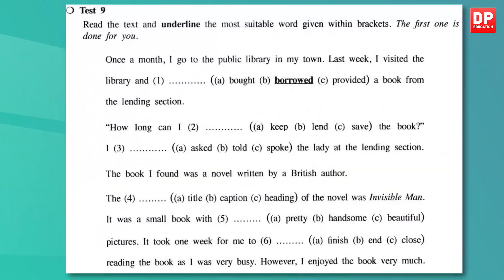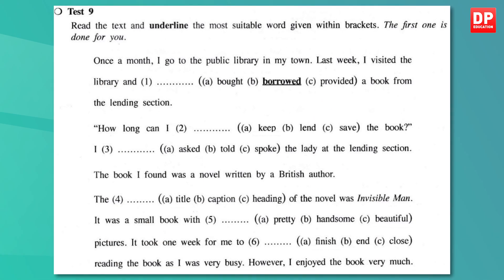Test 9: you are asked to read and underline the most suitable word given within brackets. The first one is done for you. This question is in the form of a prose text, and three options of the possible answer are given for each missing word. Read the question carefully and underline the correct word. You will be getting five marks for this section.